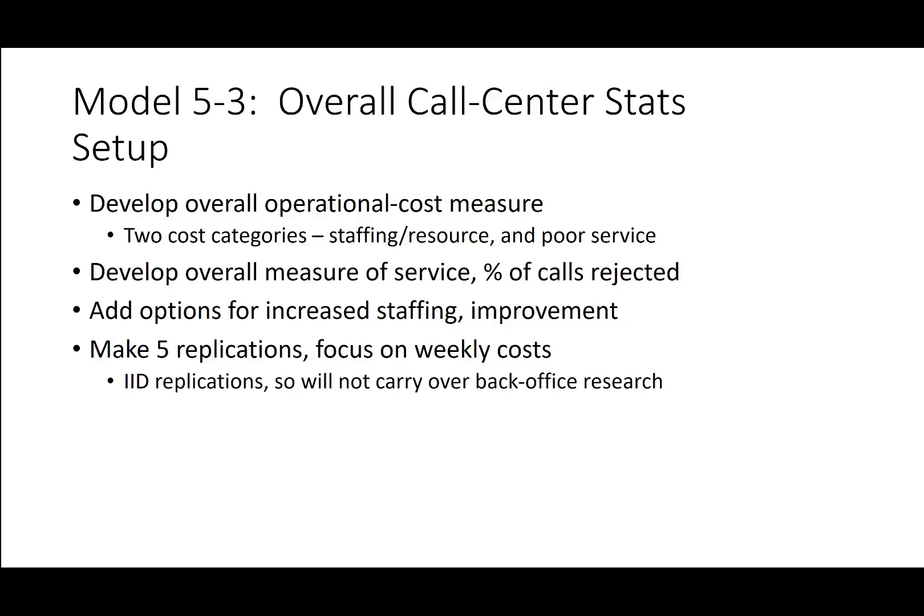Now let's look at Model 5.3, the call center with output stats setup. We want to develop an overall operational cost measure with two cost categories: staffing and resource costs, and poor service costs. We want an overall measure of service as the percentage of calls rejected, add options for increasing staffing, and make five replications focused on weekly costs.